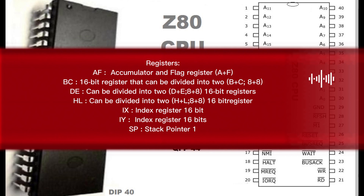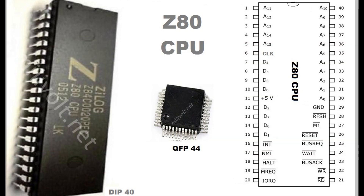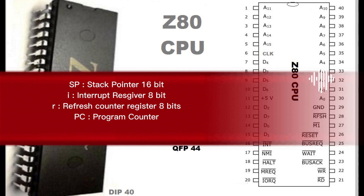SP — stack pointer, 16-bit. I — interrupt vector register, 8-bit. R — refresh counter register, 8-bit. PC — program counter.